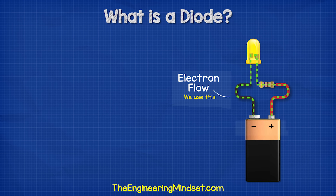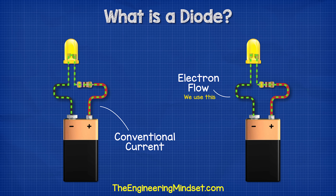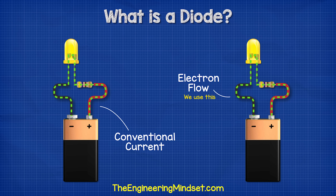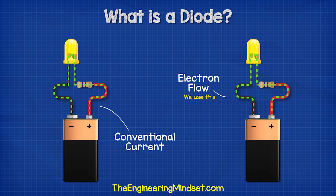I've animated this video using electron flow, which is where the electrons flow from the negative to the positive. However, you might be used to seeing conventional flow, which is traditional in electronics engineering — this is where the electrons flow from the positive to the negative. Electron flow is what's actually occurring, but you might still come across conventional current as these explanations are easier to understand. Just be aware of the two and which one we're using.